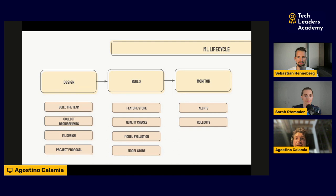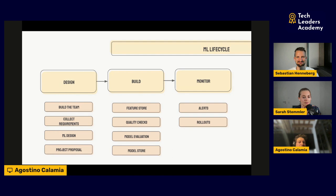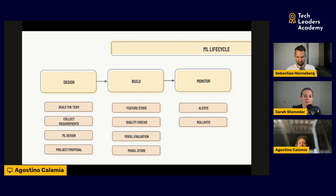Moving to the build phase — what everyone is excited about. The first sub-block is the feature store: a centralized place to access data. If it's in the feature store, someone has likely checked it's correct, clean, and reliable. That means I can easily use existing features without spending much time building a training dataset and can experiment faster with my machine learning model.